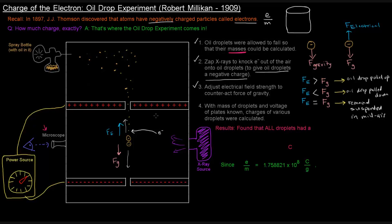With the mass of the droplets known and the voltage of the plates known, they could calculate the charges of these different droplets. The force of gravity depends on mass, and the electrical force depends on both the voltage of the plates and the charge. So with mass and voltage as two knowns, they could calculate for the charge.